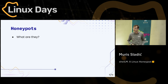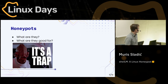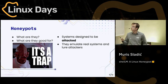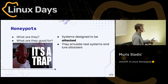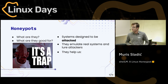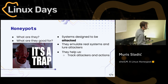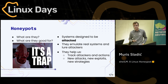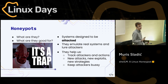Let's see honeypots. What are they? Why do we need them? A honeypot is basically a trap — a system designed to be attacked. These are systems that we try to get to emulate real systems as realistically as possible, and we hope that attackers will attack them. If attackers attack those systems, we can track them, track their actions, know who's in our system, what they're doing, when they were there, discover new attacks, new exploits, new strategies, and hopefully keep attackers busy with our fake system so they are not interacting with our real system, protecting our data.